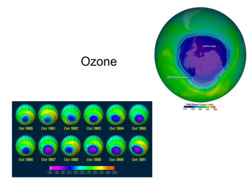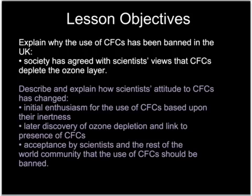This tutorial is all about ozone, a gas which forms in the upper atmosphere, and how CFCs have affected this ozone layer. We'll look at the historical side of CFCs and how they came to be banned, and also at the chemistry behind how these CFCs damaged the ozone layer.